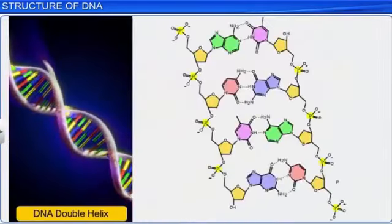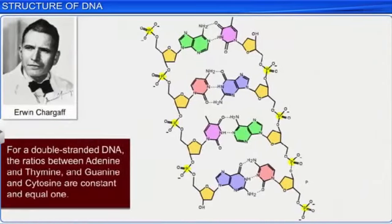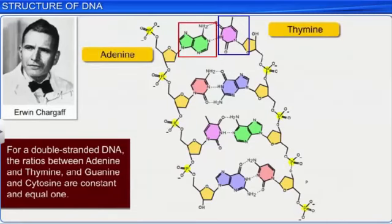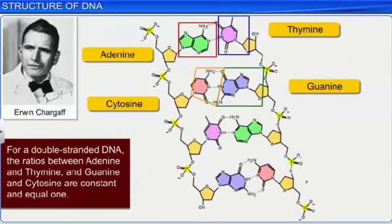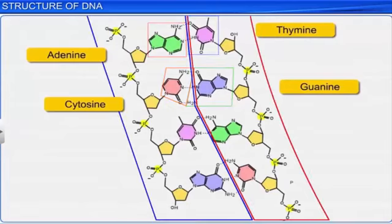This proposition was based on observations made by Irwin Chargaff, who found that the ratios between adenine and thymine, and guanine and cytosine, are constant and equal to 1 for a double stranded DNA. Due to base pairing, the polynucleotide chains possess a very unique property: the strands of the base pairs are complementary to each other.